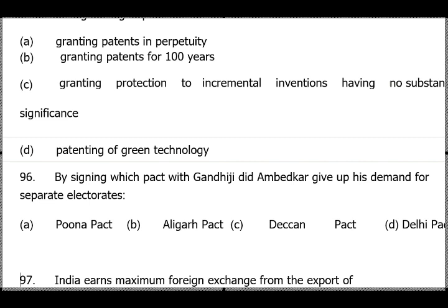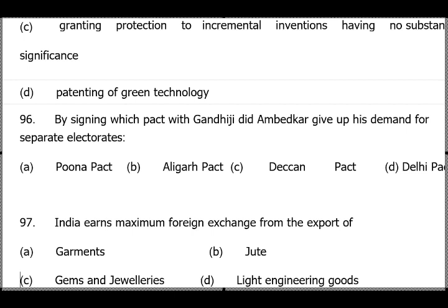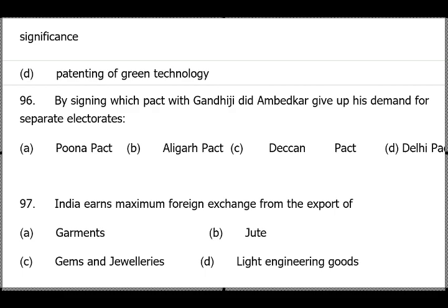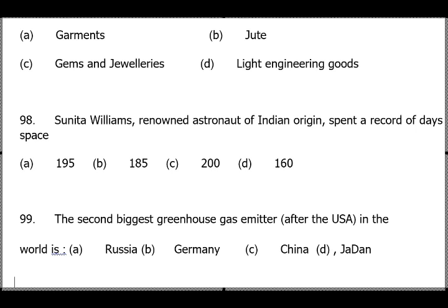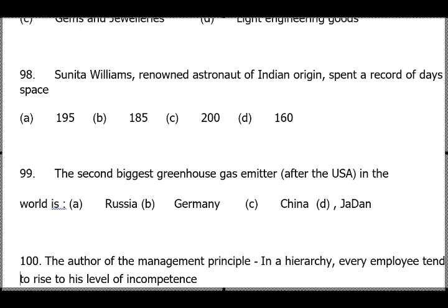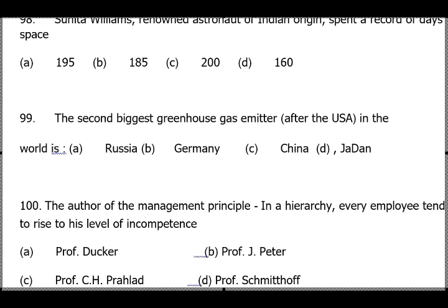Question 96: The Poona Pact of 1932, just after the Civil Disobedience Movement, involved the concept of separate electorate for depressed classes. Question 97: India earns maximum foreign exchange from exports — the paper says gems, but many sources indicate tea; if tea is an option, mark tea. Question 98: Sunita Williams' space record — answer is option A. Question 99: Second biggest greenhouse gas emitter after USA — answer is China; larger population means more pollution.